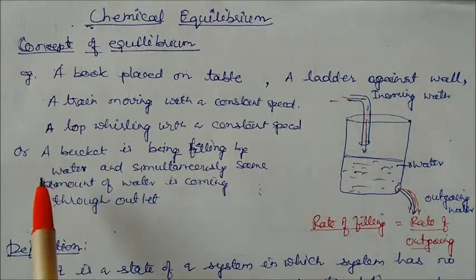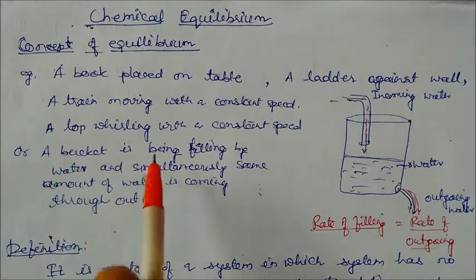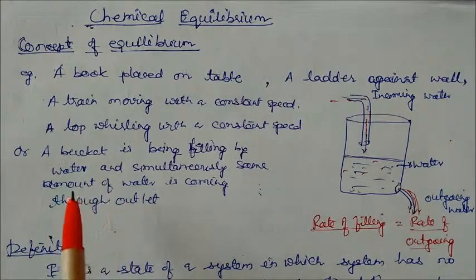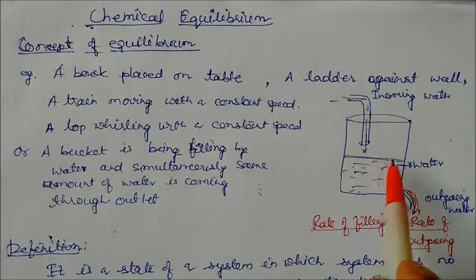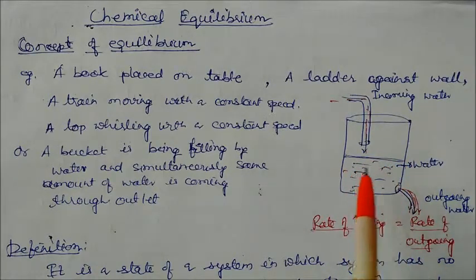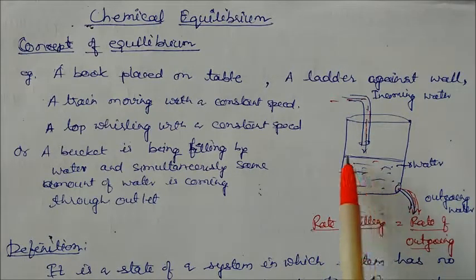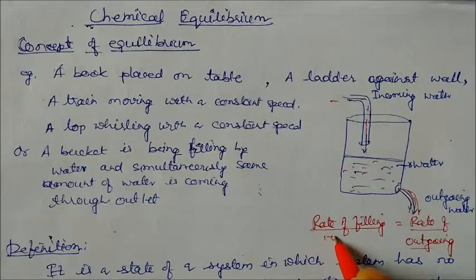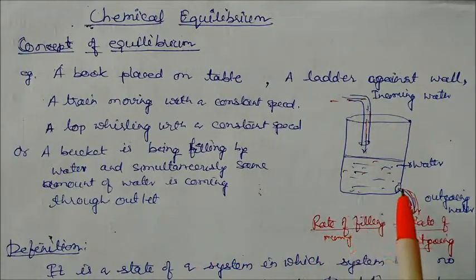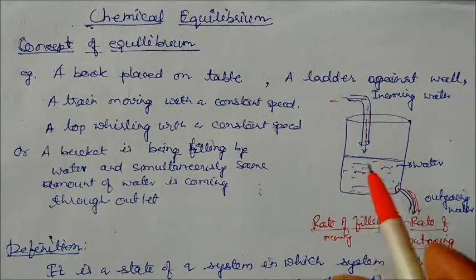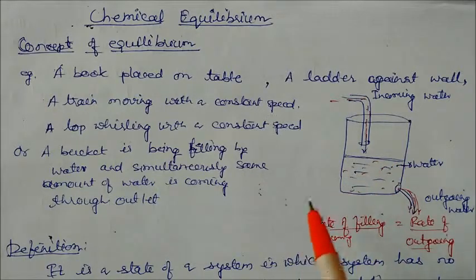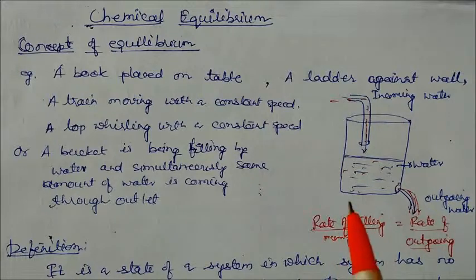Or you can also consider this condition: a bucket is being filled by water and simultaneously the same amount of water is going out. This means the level of water remains the same all the time. But it is actually not static — water is coming out as the same water is filling. The rate of filling by incoming water is equal to the rate of outgoing water. So incoming rate equals outgoing rate. In equilibrium, you cannot see any change in the system — it appears constant. That is called equilibrium.